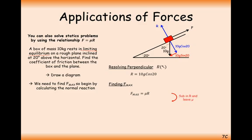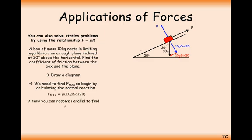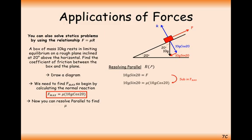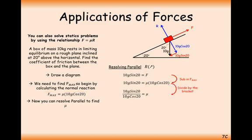Resolve the forces: 10g cos 20 perpendicular and 10g sin 20 along the slope. Resolving perpendicular: R equals 10g cos 20. Finding F max: that's μ times R, leaving μ as a letter. Resolving up and down the plane: downward forces equal upward forces, so 10g sin 20 equals F max. Substituting the friction force and dividing by 10g cos 20, the 10g's cancel, giving the answer as tan 20, or 0.36 as the coefficient of friction.